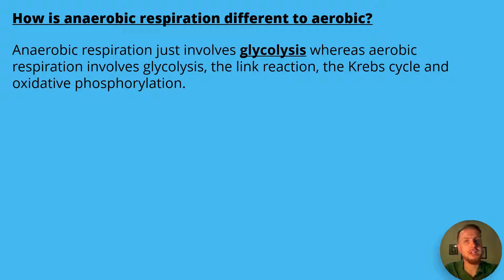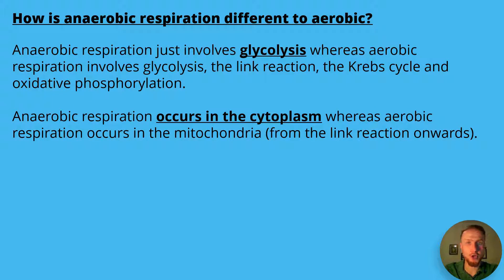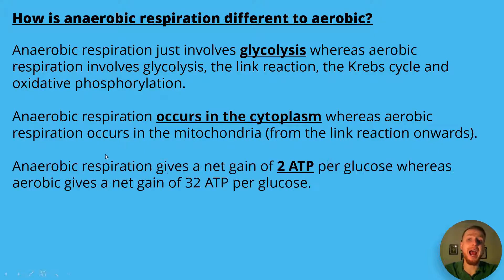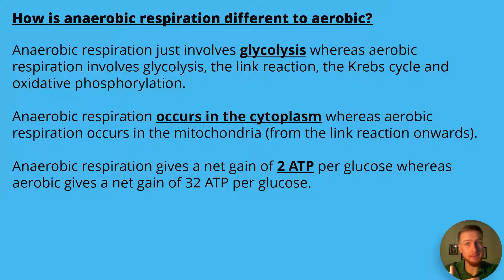I've released a video on all of those key processes in aerobic respiration so be sure to check them out. Anaerobic respiration occurs in the cytoplasm, whereas aerobic respiration occurs in the mitochondria, at least from the link reaction onwards. Anaerobic respiration gives a net gain of 2 ATP, whereas aerobic respiration gives a net gain of 32 ATP — though you may see it represented as 32 to 38 depending on which textbook you look at.